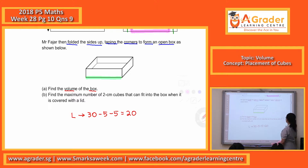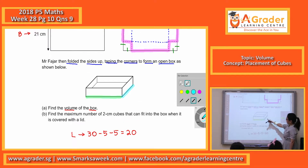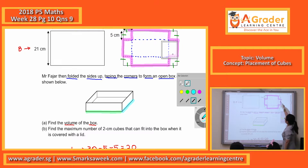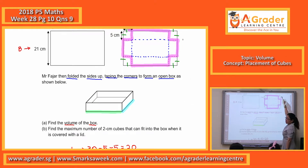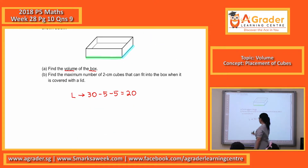Then, of course, the same thing — how do I find the breadth now? This part is here, and the whole thing is 21. Minus 5 minus 5. So for the breadth, that gives us 11.